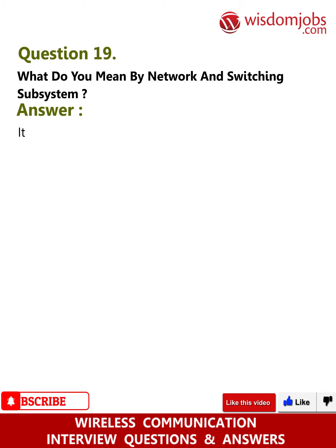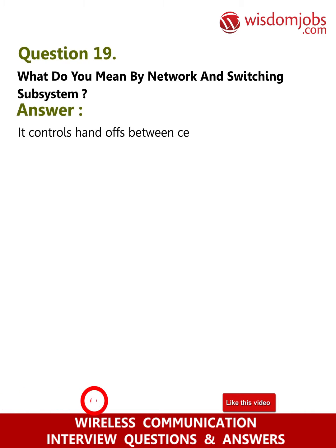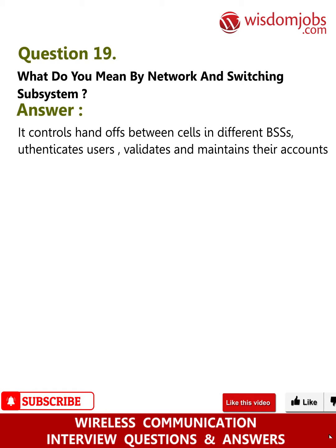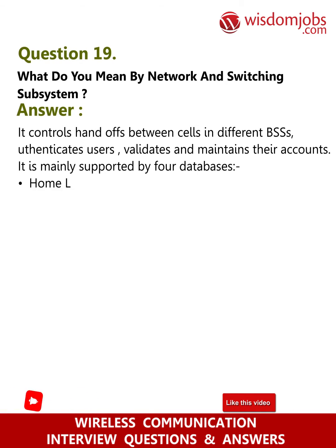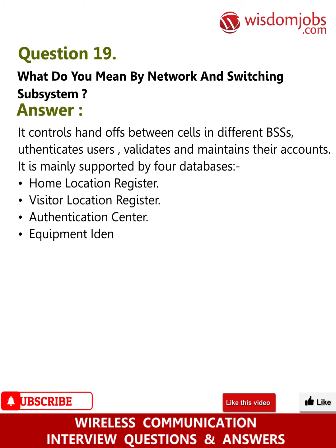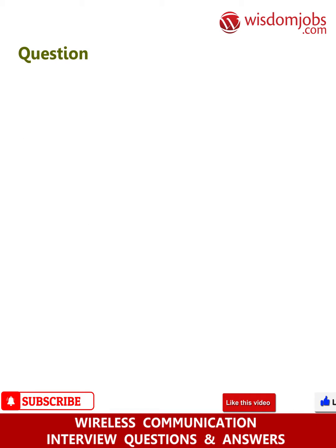Question 19: What do you mean by network and switching subsystem? Answer: It controls handoffs between cells in different areas, authenticates users, validates and maintains their accounts. It is mainly supported by four databases: Home Location Register, Visitor Location Register, Authentication Center, and Equipment Identity Register.